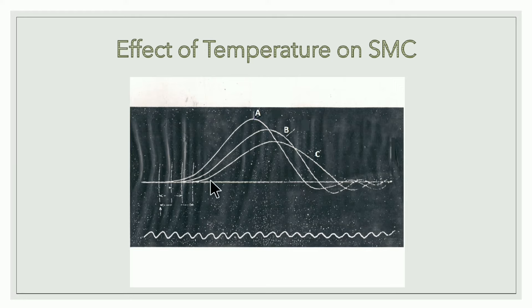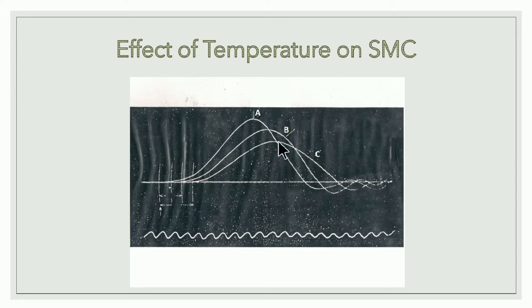When the skeletal muscle is dipped into cold saline or cold Ringer lactate solution, the C graph is obtained. The height of contraction decreases and all periods are lengthened. So when cold saline is added, the height of contraction decreases and all the periods are lengthened. For identification, the graph name is effect of temperature on simple muscle curve, identified by the three levels of graphs.